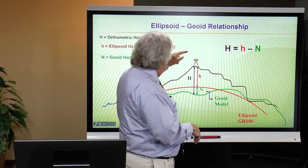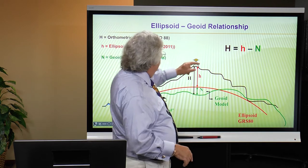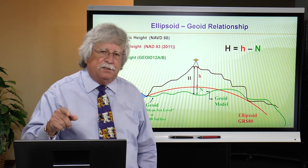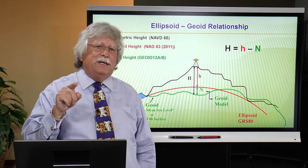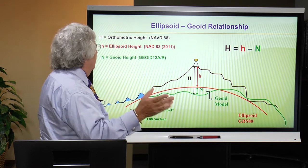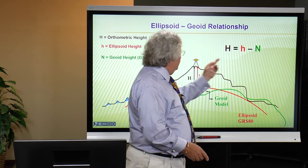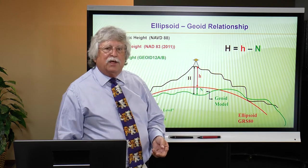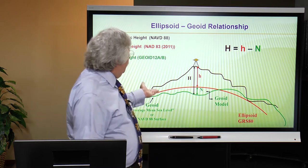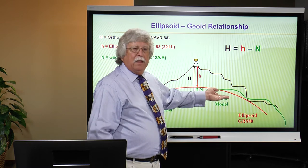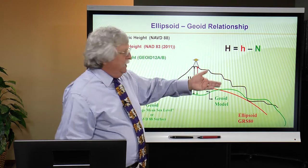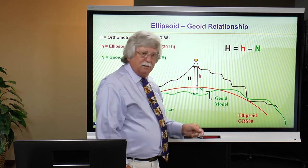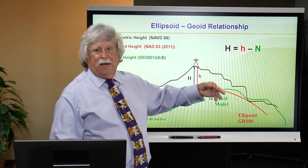Here's the equation: big H — my height above the geoid — equals little h, my ellipsoid height, minus N. Those of you who are paying attention might ask: why is that a negative number? Because this looks like it should be big H equals little h plus N. The reason for the negative sign is that in the conterminous United States, Puerto Rico, and the Virgin Islands, the geoid is always below the reference ellipse. The way NGS shows it is: if the geoid is below the ellipse, then big N is a negative number — so minus a minus is a positive.